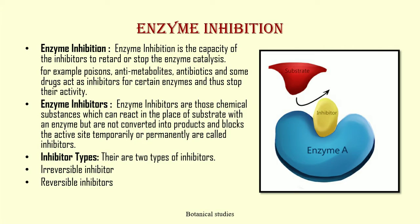Enzyme inhibition. Enzyme inhibition is the capacity of inhibitors to retard or stop enzyme catalysis. For example, poisons, anti-metabolites, antibiotics, and some drugs act as inhibitors for certain enzymes and thus stop their activity. Enzyme inhibitors are those chemical substances which can react in the place of the substrate with an enzyme, but are not converted into products, and block the active site temporarily or permanently.